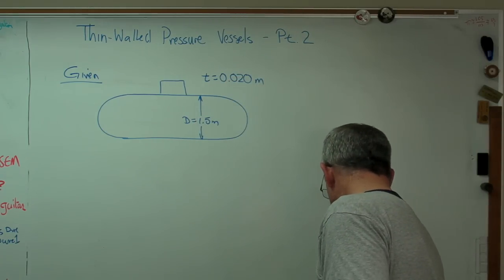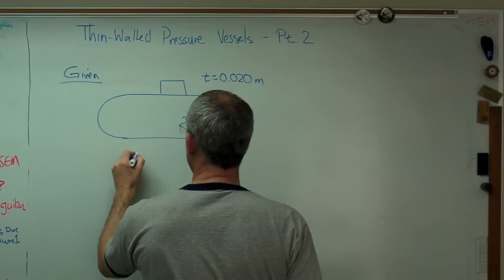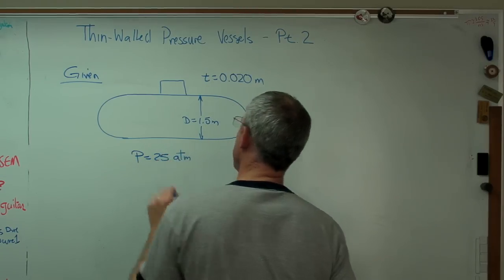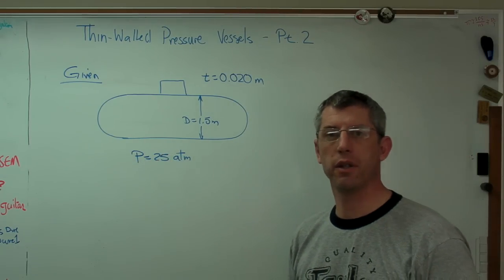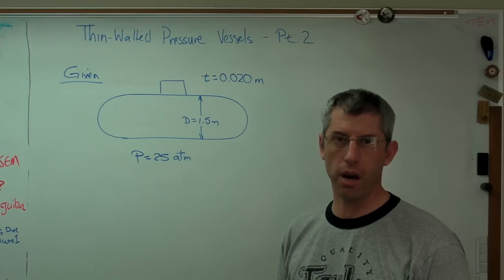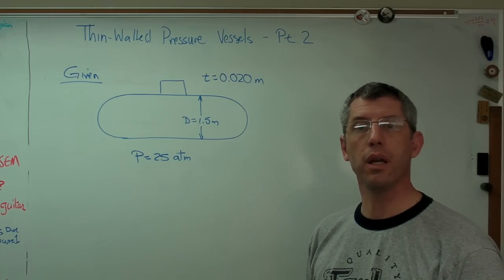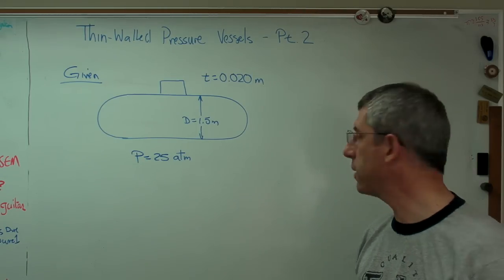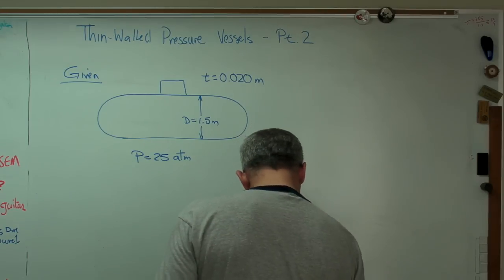So if you're working in English units, 1 atmosphere is 14.7 psi, nominally. And if you're working in metric units, 1 atmosphere is 101.3 kilopascals. So let's do that. Let's assume all that stuff.